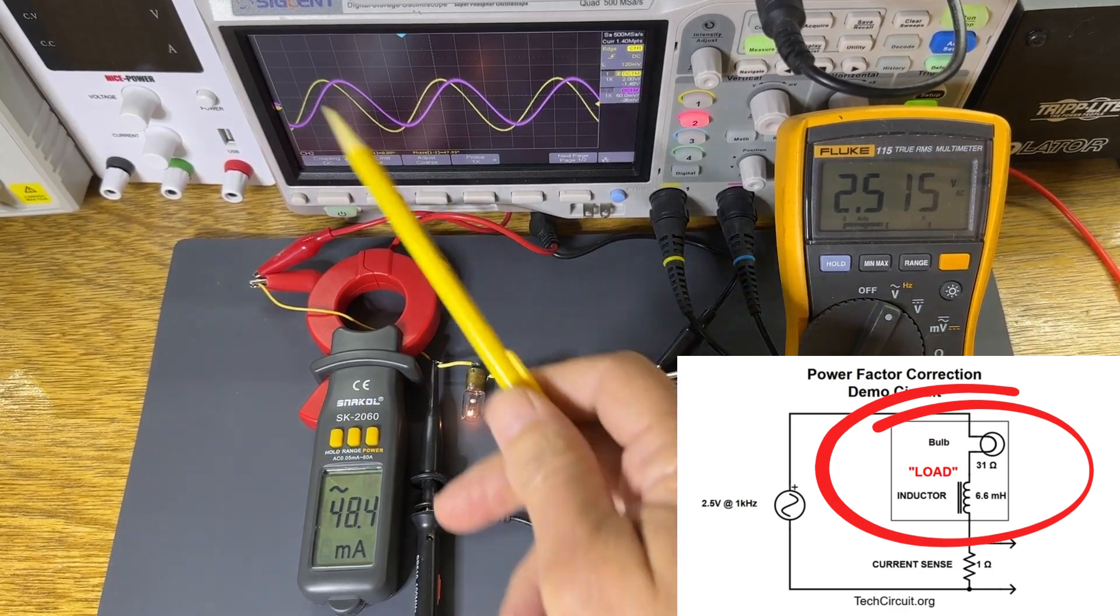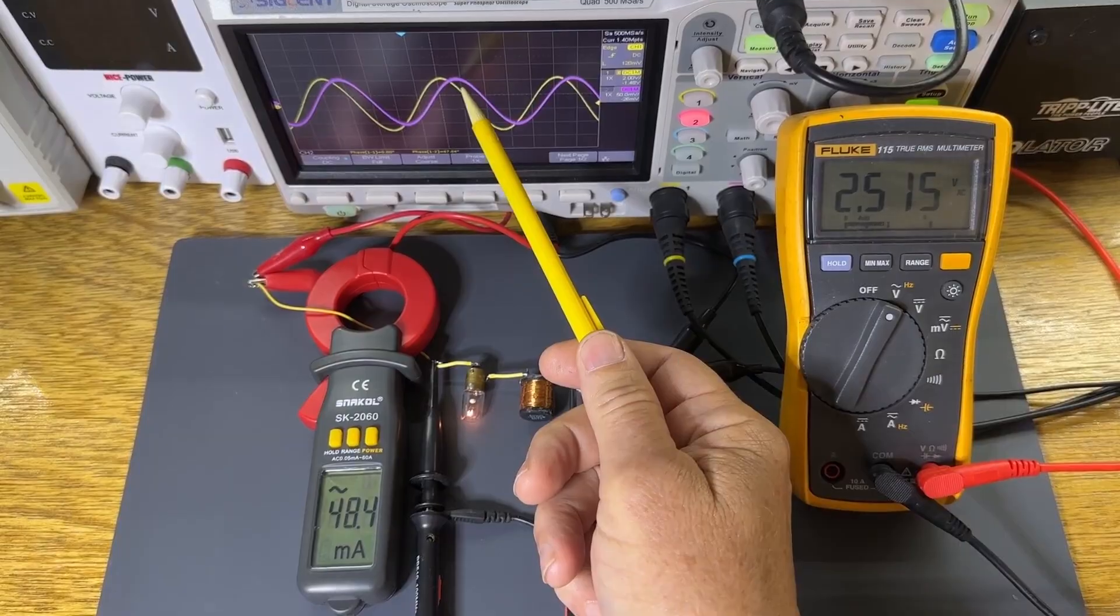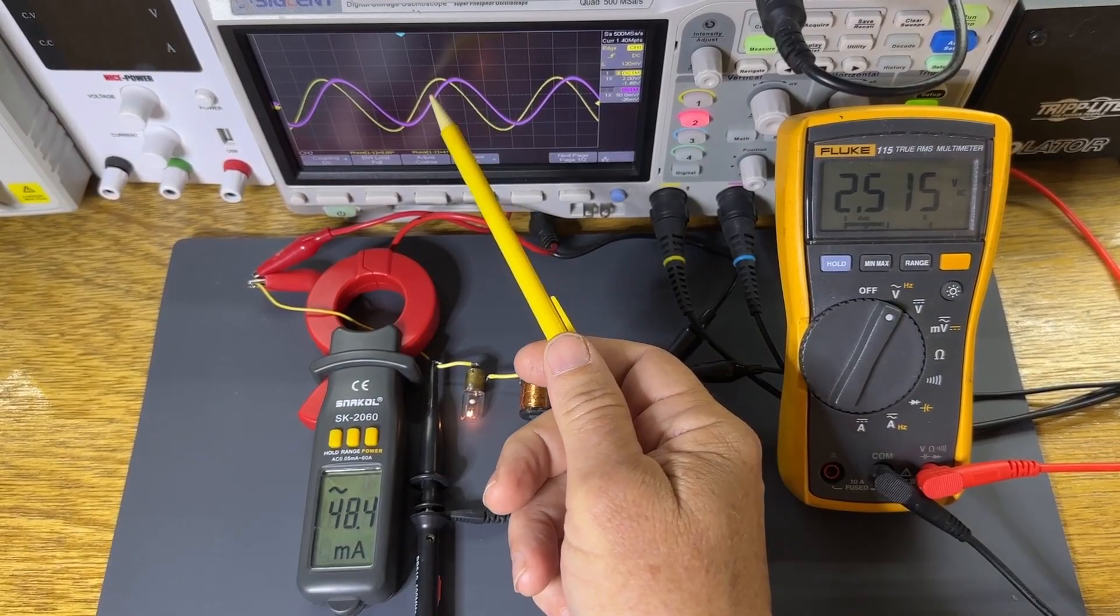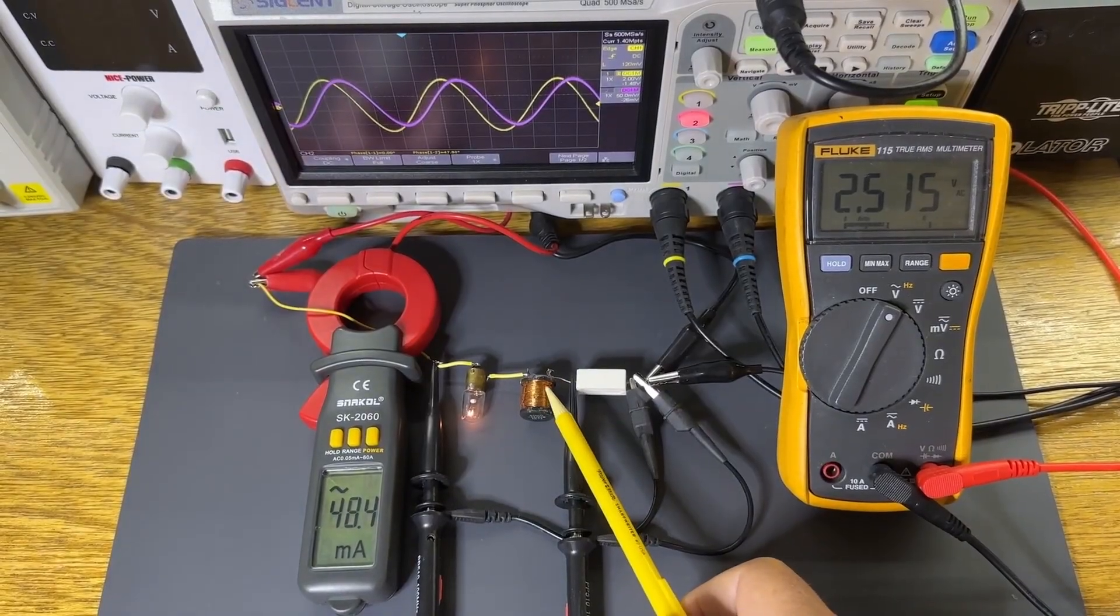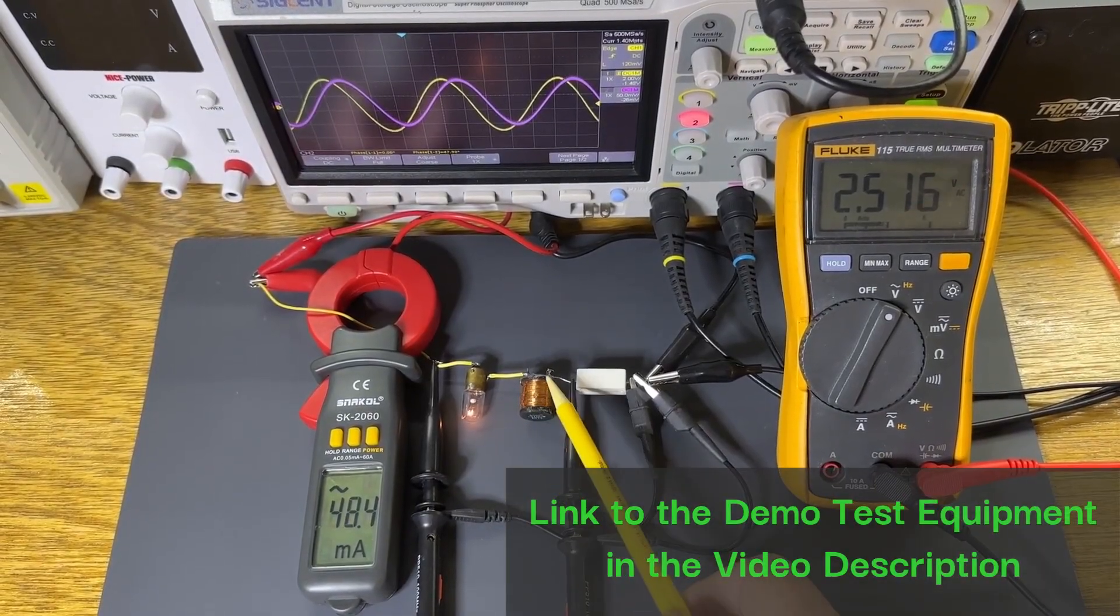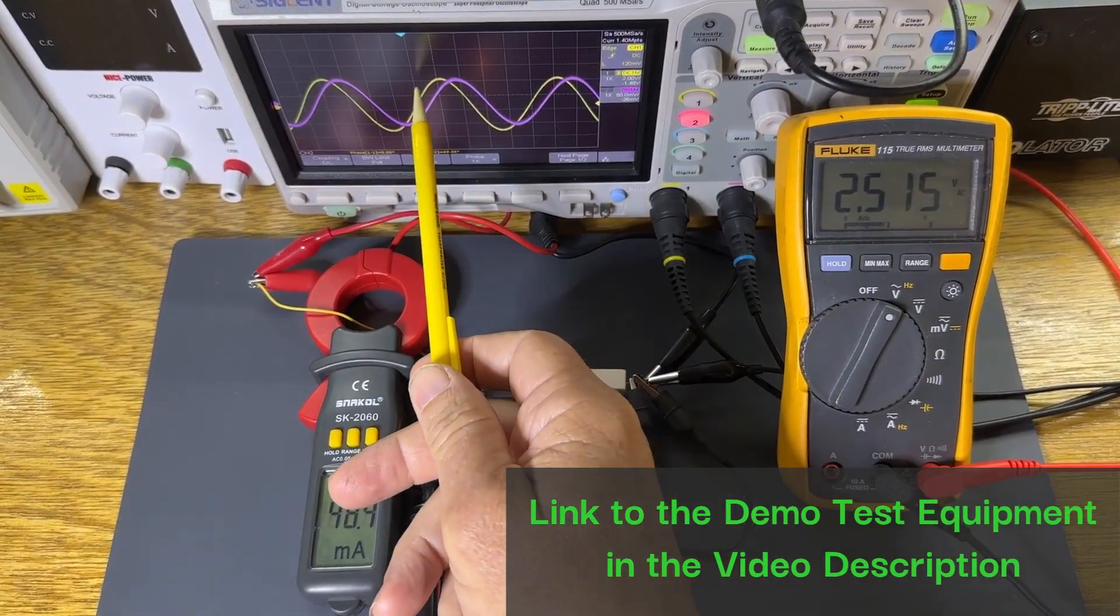Watch the oscilloscope. The yellow trace is voltage and the purple trace is current. See how the current is lagging behind the voltage? That's what inductors do. They store energy in their magnetic field and release it later, pushing the current out of sync with the voltage.